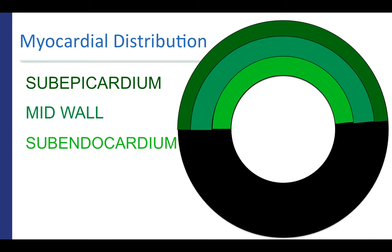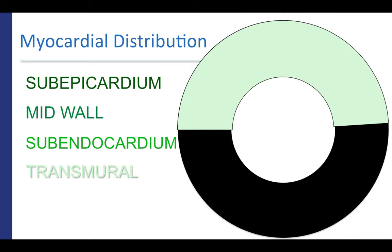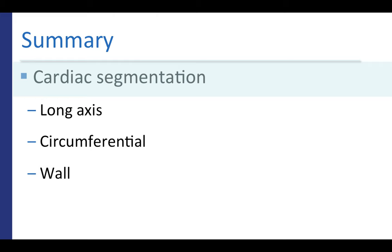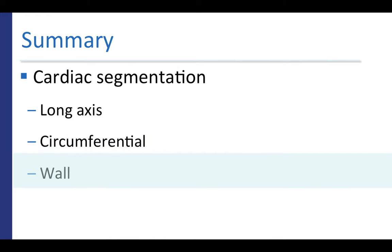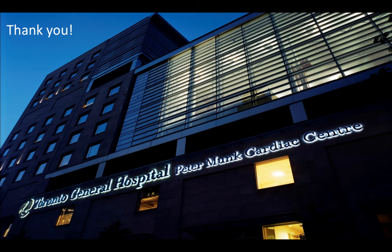Findings on cardiac MRI do not necessarily correspond to only one of these distributions and could even be transmural. In summary, we have briefly reviewed cardiac segmentation along the long axis of the left ventricle, the circumference of the left ventricle on short axis slices, and along the wall thickness. Thank you very much for your attention.